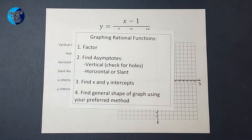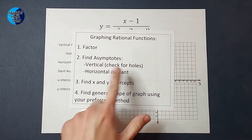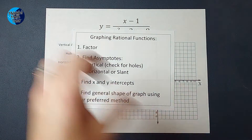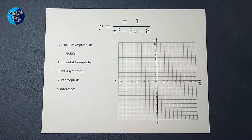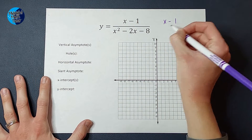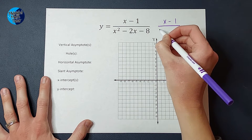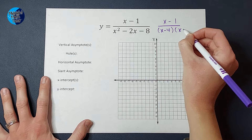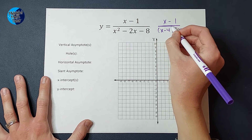The first thing we're going to do is factor. If you need a factoring review, I will link one in the corner for you. I already went and factored this for you — the top stays the same, and the bottom will be x minus 4 times x plus 2. Look, we're already factored.